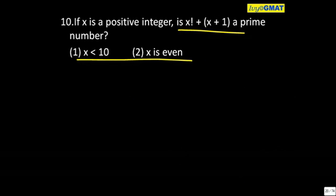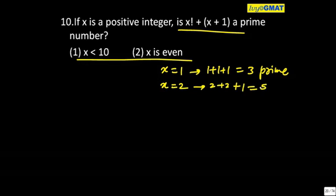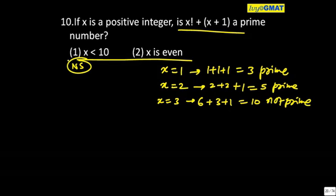What all numbers will you start with? You will start checking. So statement 1 is not sufficient because at x=1 I get prime, at x=2 I get prime, at x=3 I get not prime, so it is not a confirmed answer.